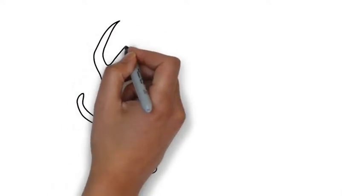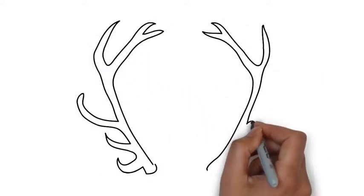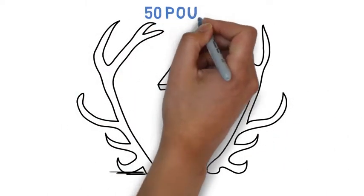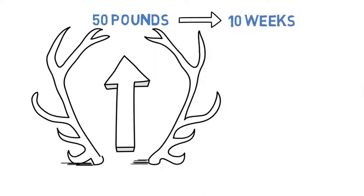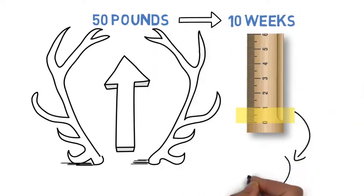Antler is the only mammal organ that regenerates every single year. Antlers grow up to 50 pounds in about 10 weeks, just a few months, growing at a rate of about an inch a day.